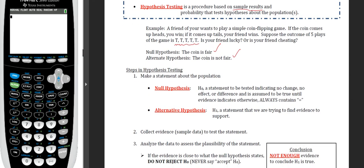Both terms — null and alternative hypothesis — have specific meaning. The null hypothesis, or H sub zero (H-null), is a statement to be tested indicating no change, no effect, or difference. It is given the burden of proof — it's either going to be refuted or not refuted. It's the statement indicating there is no change in value from one point to another.